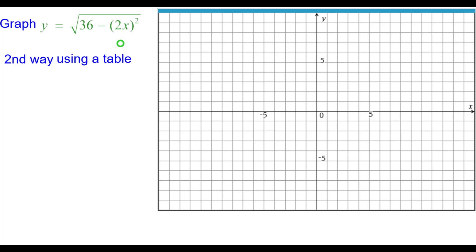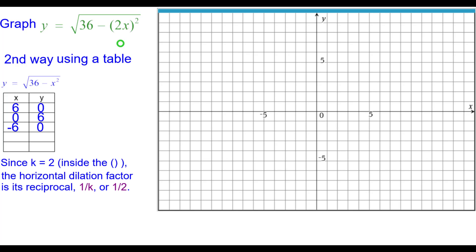Second way, using a table. This is our table of three values for this, the x and y intercepts. Since k equals 2 inside the parentheses there, the horizontal dilation factor is its reciprocal, which is a half.